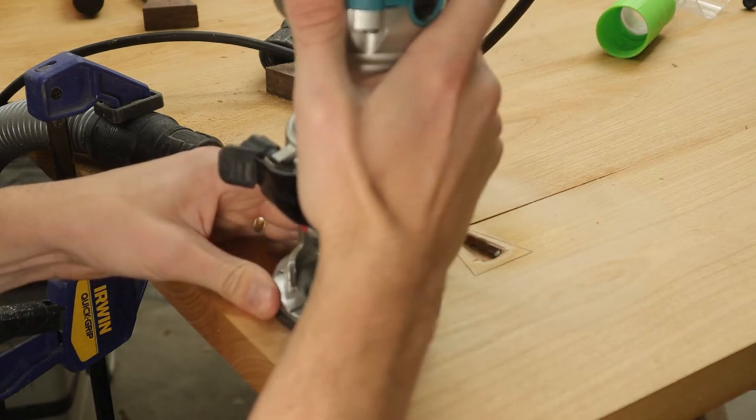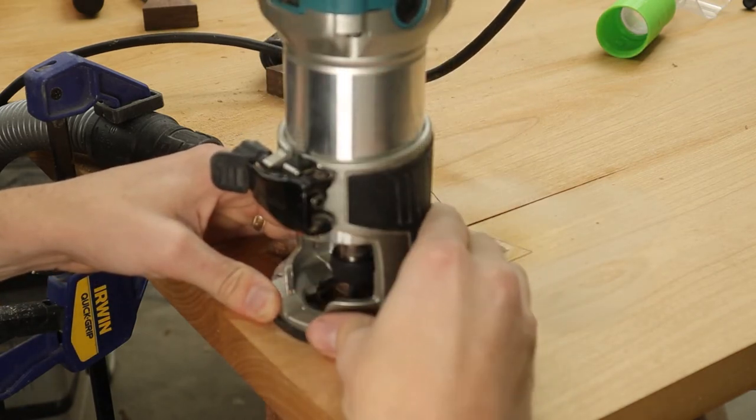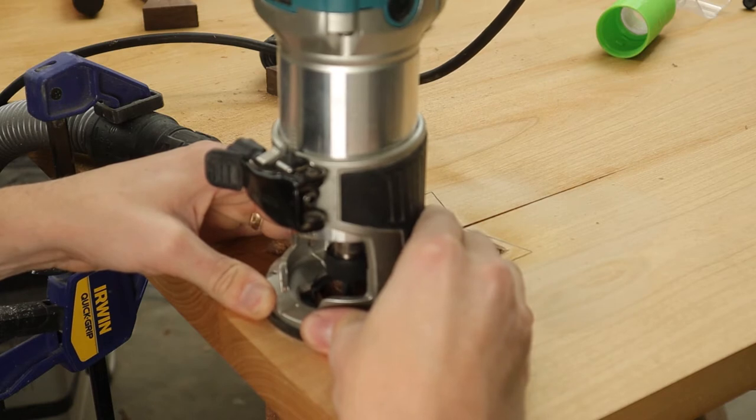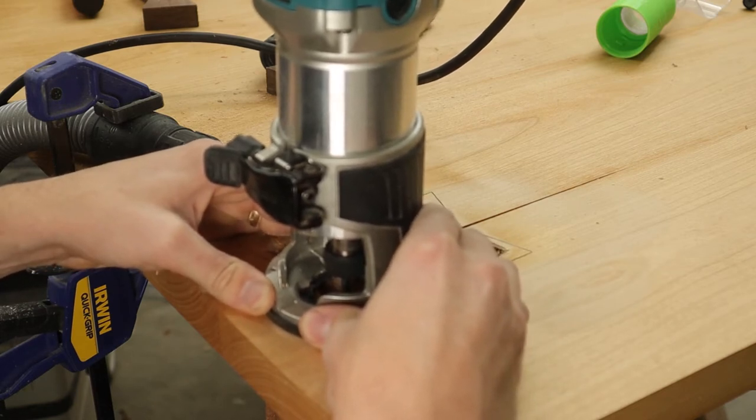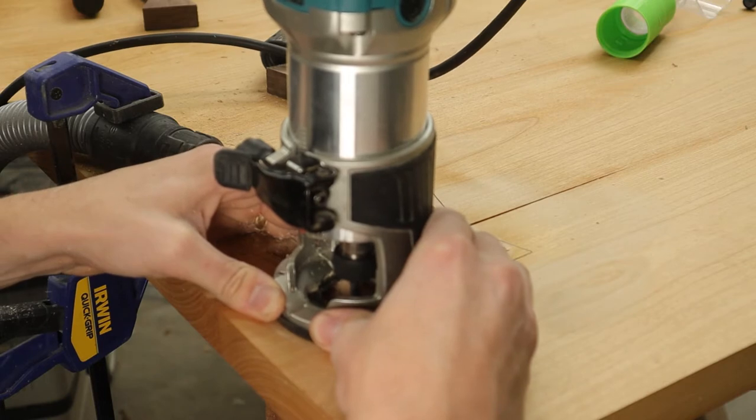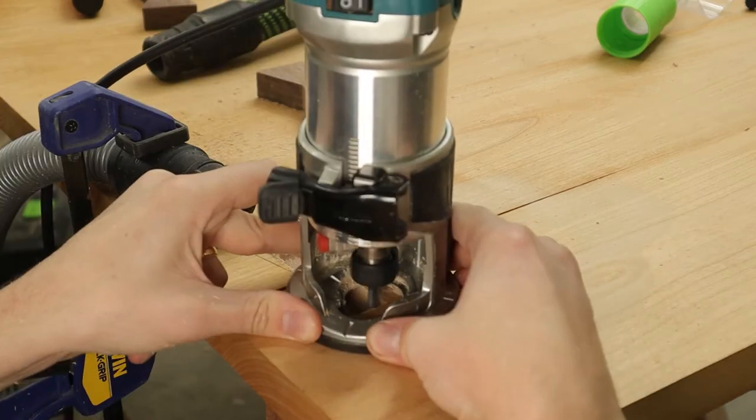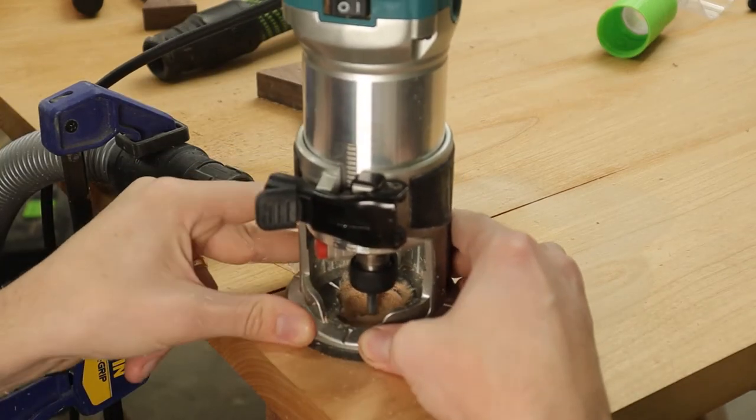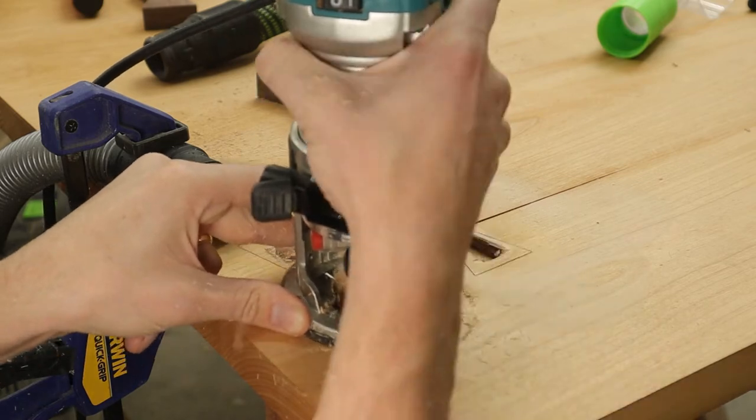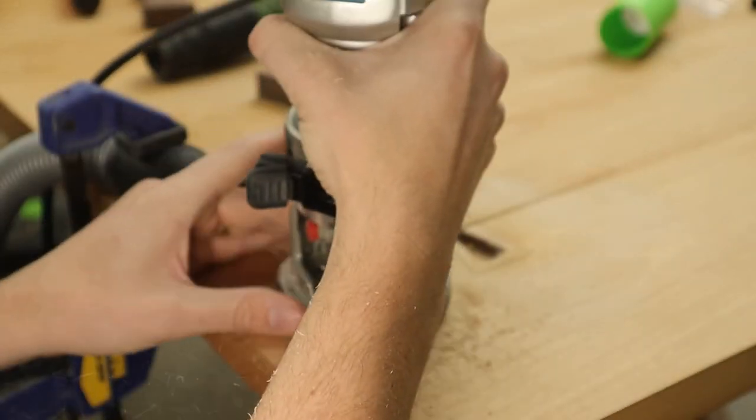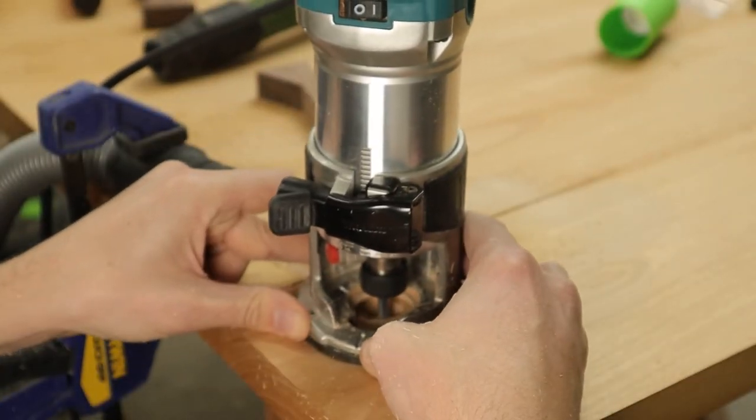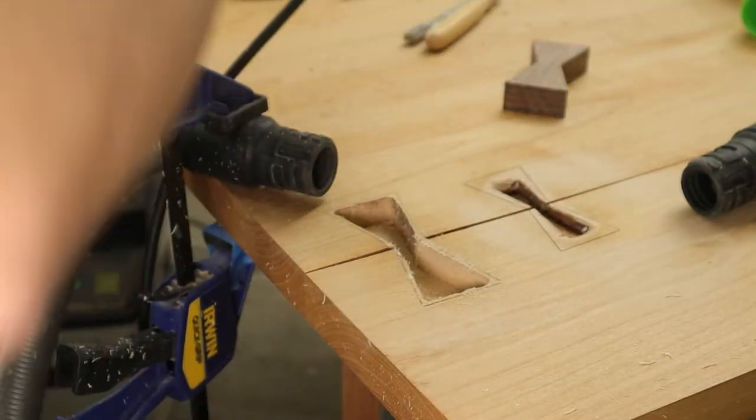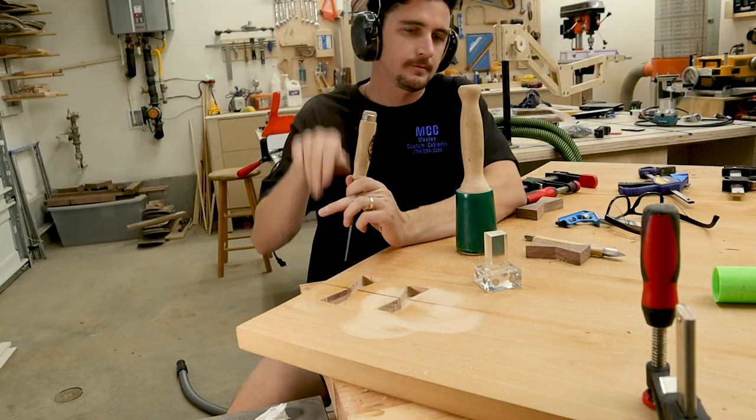Normally I have a shop vac hooked up to my router, but I couldn't see my lines at all so I decided to take it off and get a little dusty. So the key here is to get as close to your line as possible without obviously going over. Takes a little bit of practice, but once you get the hang of it you can get pretty close to that line.